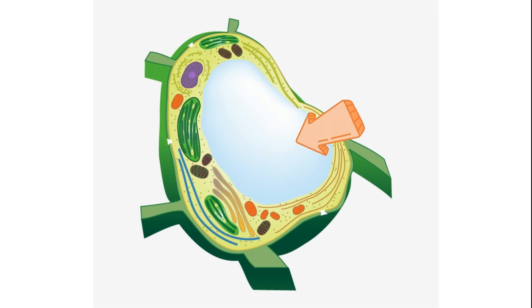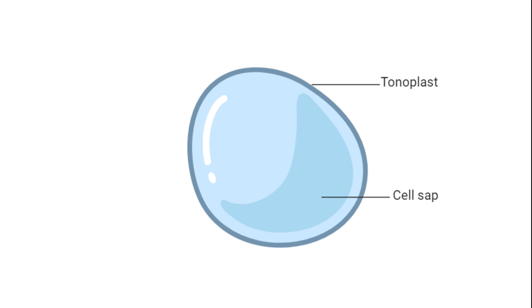The vacuole's structure is dynamic and complex, comprising various components that contribute to its multifaceted functions. The vacuole's membrane, known as the tonoplast, encloses the fluid called cell sap.